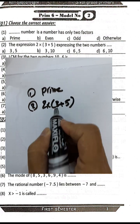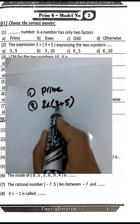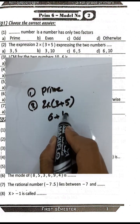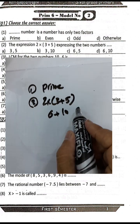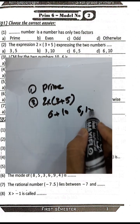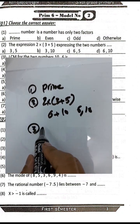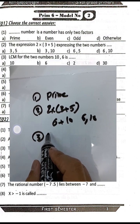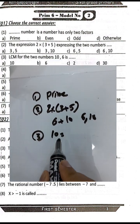Two times three equals six and two times five equals ten. So we have here two numbers: six and ten. Question number three: find the LCM of the two numbers ten and six.